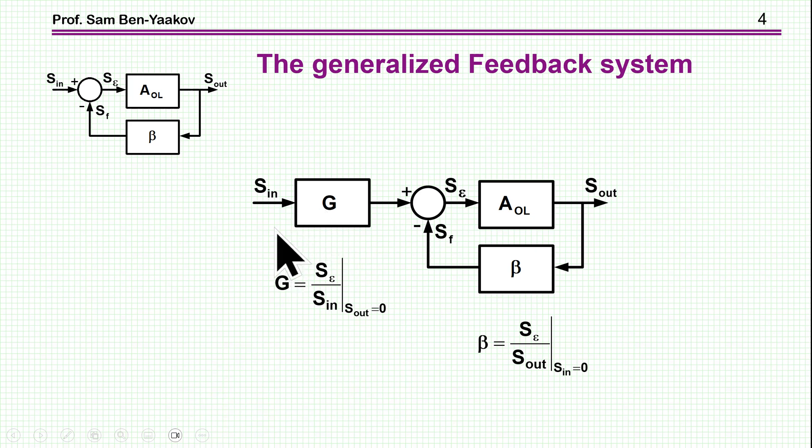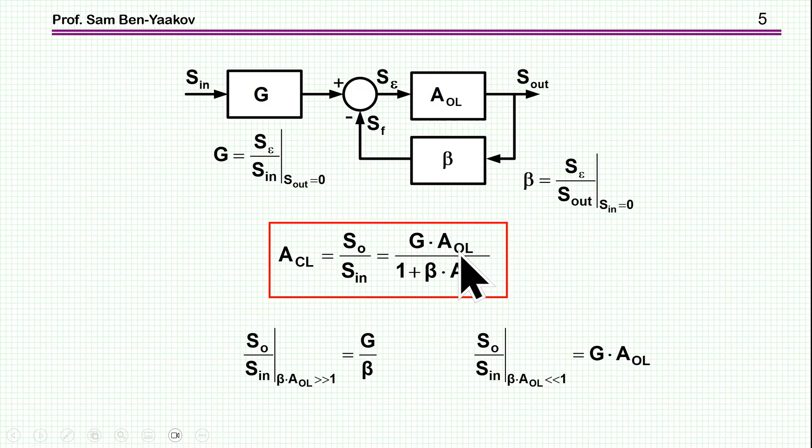Now, the definition of the G is the transfer function between the input and the error signal when the output is zero. Output is zero, then the transfer function from here to here is the G block. And beta is, as usual, the transfer function to the summing junction from the output when S in is zero. So these are the definitions of G and beta, and then the transfer function in the closed loop will be the same thing as before, except that it is multiplied by G.